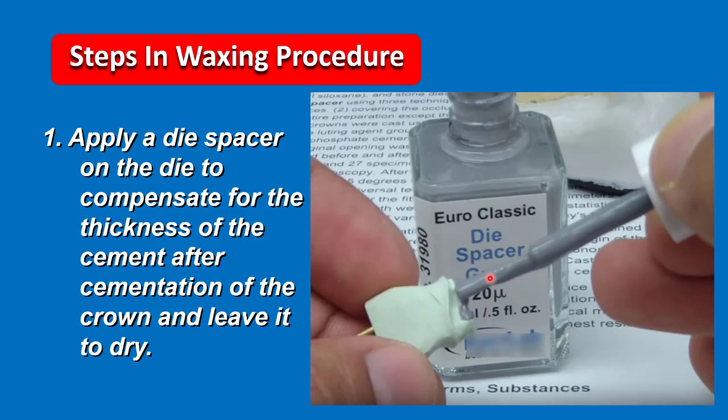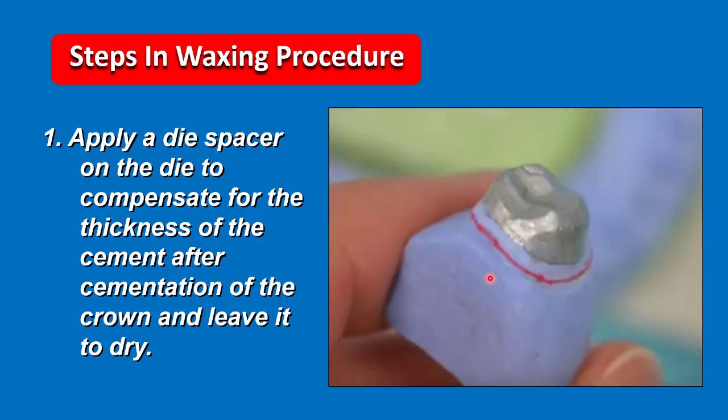The steps in the waxing procedure. First, apply a die spacer on the die to compensate for the thickness of the cement after cementation of the crown, and leave it to dry. As you can see here, we apply the die spacer away from the finishing line, no more than one millimeter.